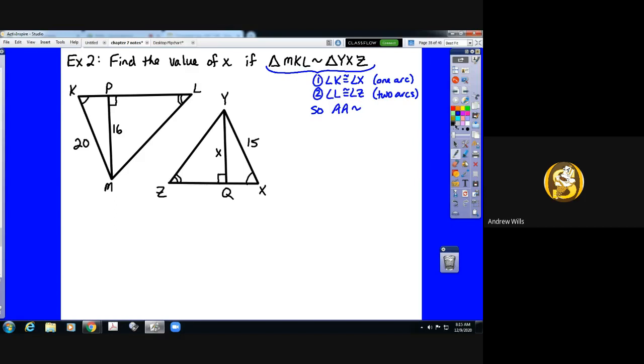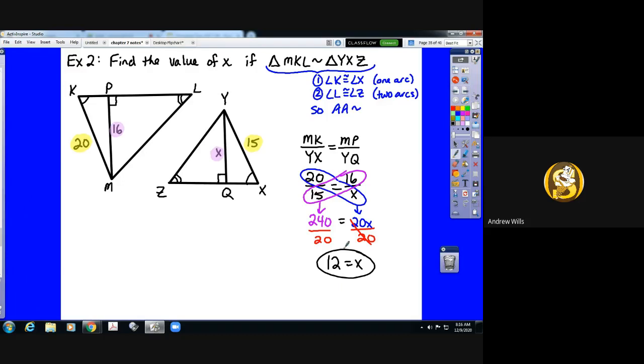In the meantime, almost everybody has solved, and we look like we agree on an answer of X equals 12. So let's just double-check that here. We have got MK is to YX, those would be the side lengths. So we've got MK from the first triangle and YX on the corresponding side from the other triangle equals, and then we've got an altitude of 16 and an altitude of X, so we should have 16 over X, which is MP over YQ. So 20 is to 15, as 16 is to X. We cross-multiply. 20 times X is 20X, is equal to 16 times 15, which is 240. Divide by 20, and you are 100% correct. X equals 12. Very good. Well done, everyone.